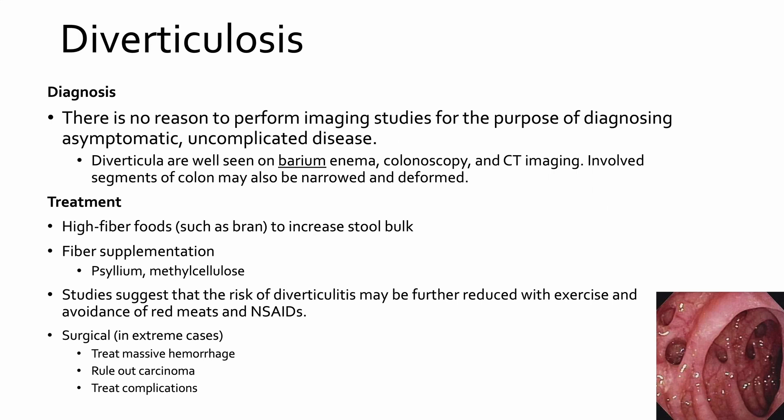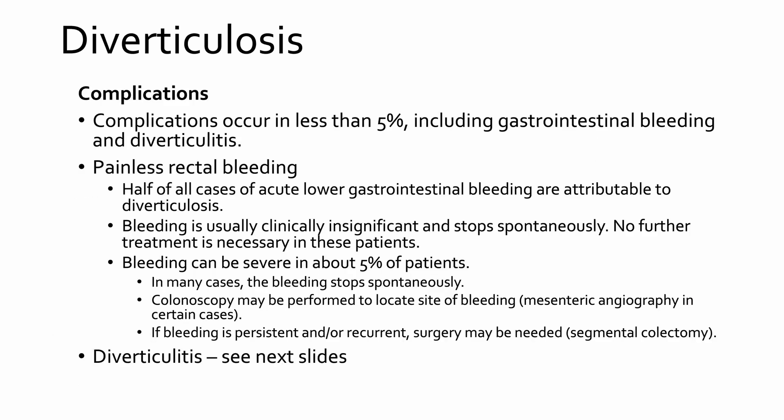Treatment for diverticulosis includes high-fiber foods like bran, increasing stool bulk, and fiber supplementation such as psyllium-based products, flaxseed powder, and methylcellulose. Studies show risk of diverticulitis can be reduced with regular exercise and avoiding red meats and NSAIDs. In extreme cases — massive hemorrhage or ruling out carcinoma — surgery can be performed to remove the section of colon with diverticula.